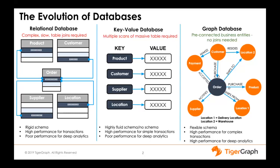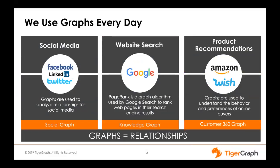With graph databases, all business entities — product, customers, payments, orders, suppliers — are pre-connected, making relationship analysis much faster. We use graphs every single day. Every time you use Facebook, LinkedIn, or Twitter, you're using a graph database in the back end. When you search LinkedIn and see second- or third-level connections, that's from a graph database. Every Google search uses PageRank, a classic graph algorithm. Product recommendations on Amazon and Wish.com come directly from a graph database.